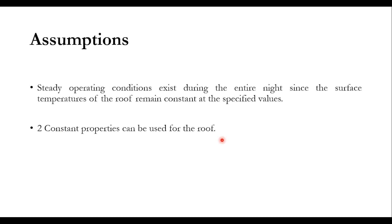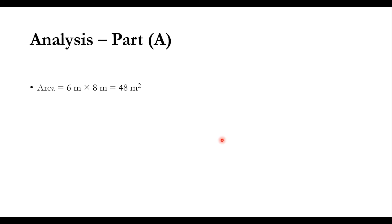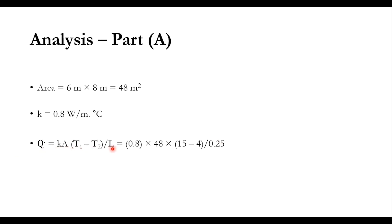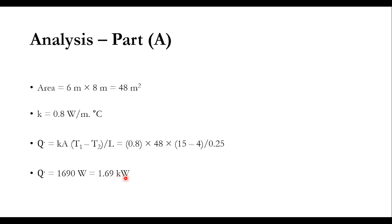Solution: Area = 6 m × 8 m = 48 m². k = 0.8 W/m·°C. Using Q̇ = k·A·(T1 − T2) / L: Q̇ = 0.8 × 48 × (15 − 4) / 0.25. The answer is Q̇ = 1690 W = 1.69 kW. Note: the negative sign in Fourier's Law arises from the convention T2 − T1; using T1 − T2 directly gives a positive value and does not affect the magnitude of the answer.